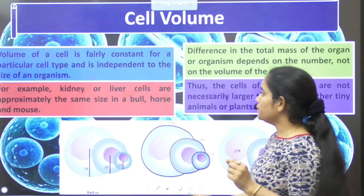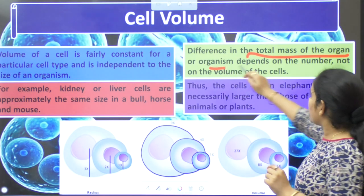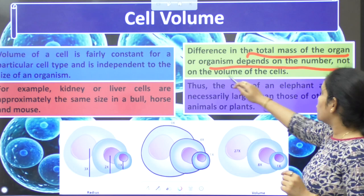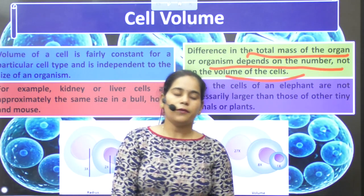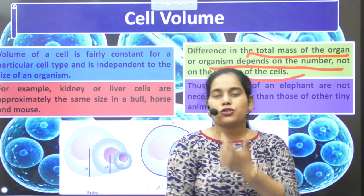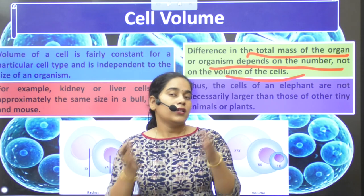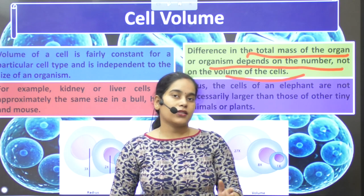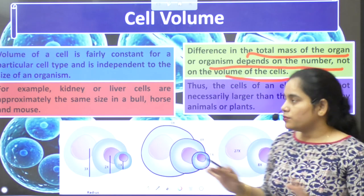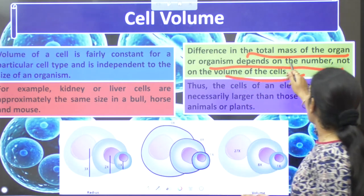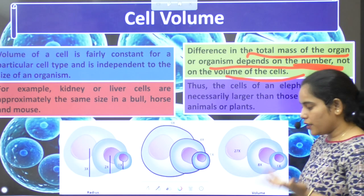So, the difference in the total mass of the organism depends on the number of cells, not on the volume of the cell. Think about it — the elephant is so big and the mouse is so small. The volume of the cell will not vary; what will vary is the number of cells.